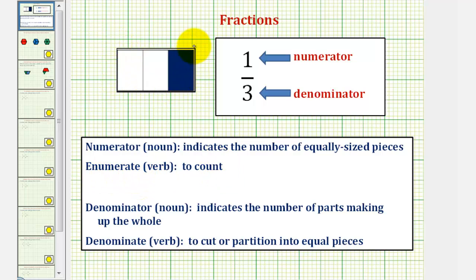So if this rectangle represents one whole, we can say it's been denominated or cut into three equal partitions, and because one of those pieces is shaded, we could say the shaded part represents one third.